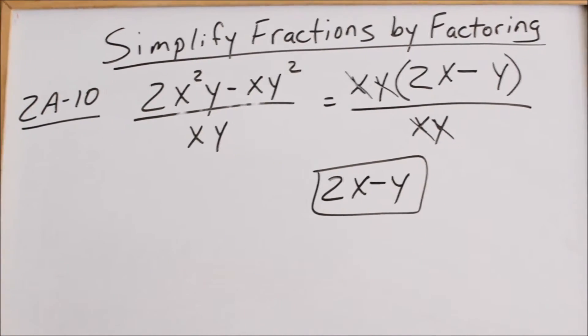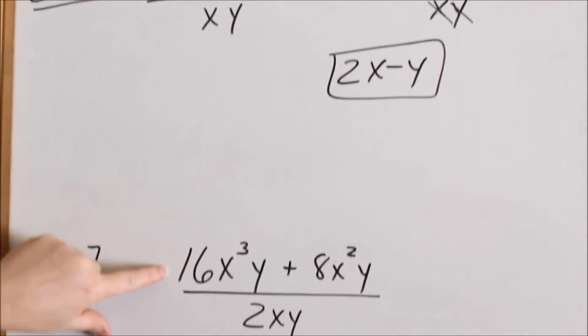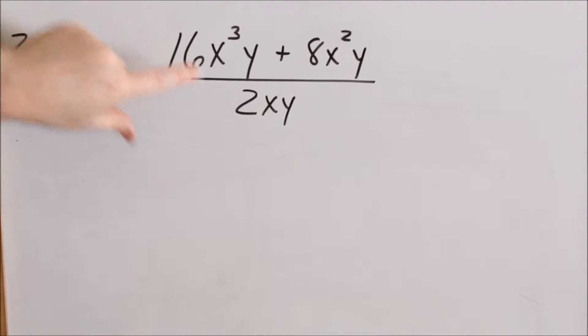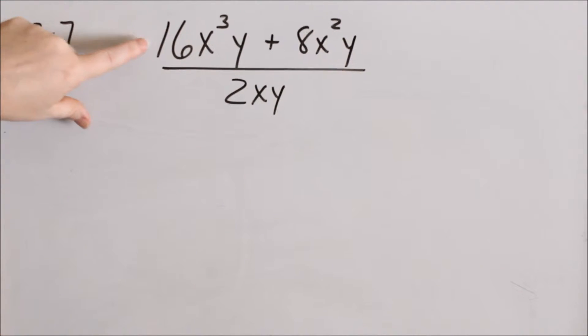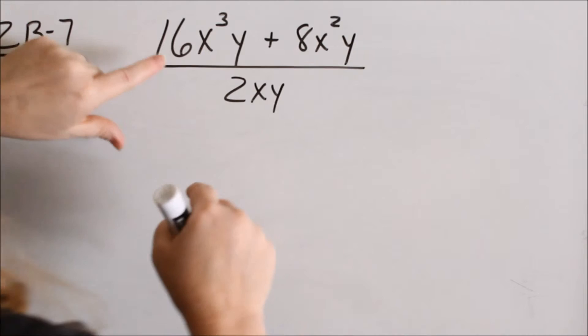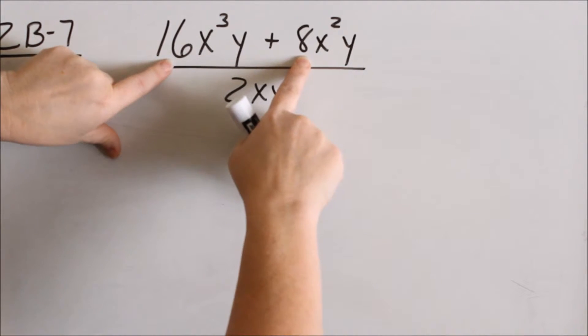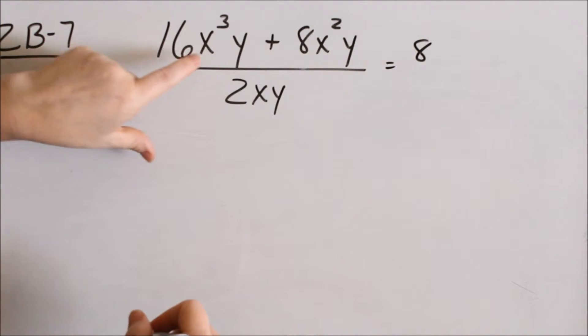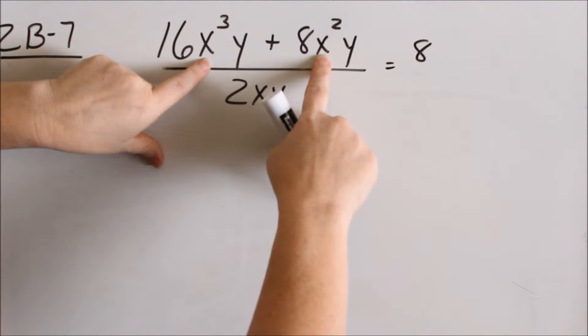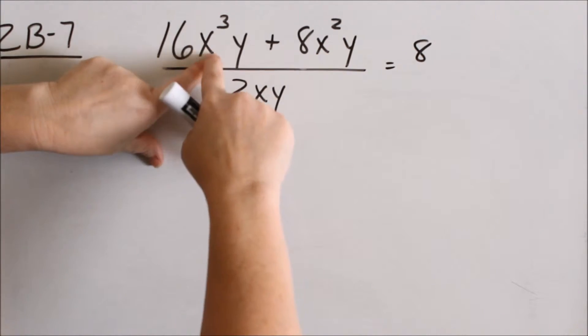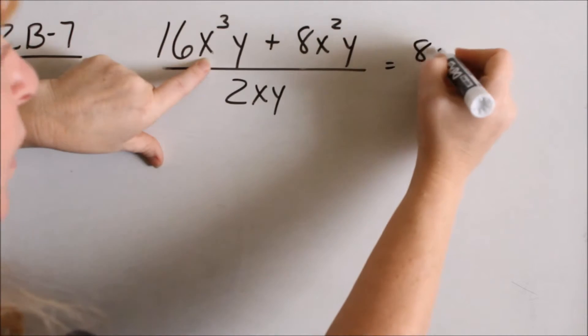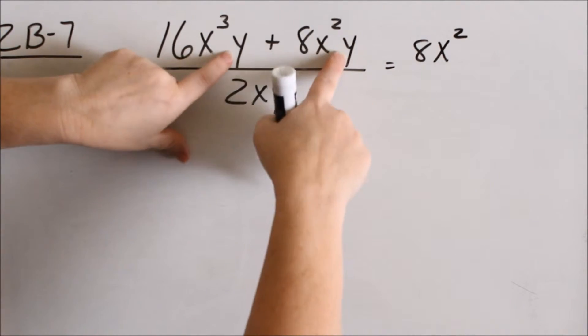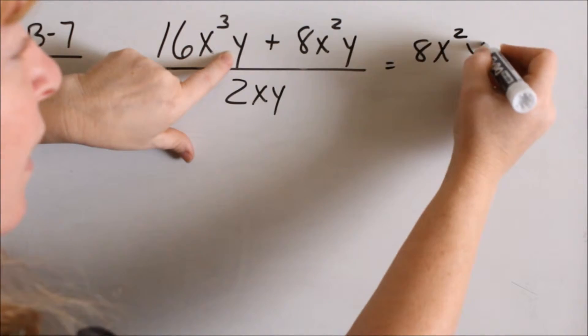Okay, let's look at 2B-7. So I want to look at what can I factor out of the numerator that might cancel with the denominator. First, I look at my numbers in the numerator, 16 and 8. What's the most that I can factor out of 16 and 8? I can factor out an 8. Now look at my x's. What's the most number of x's I can factor out? You look at the lowest exponent. I can factor out an x squared. Because I can pull an x squared out of here, there's enough. Now look at my y's. Yes, I can factor out a y.